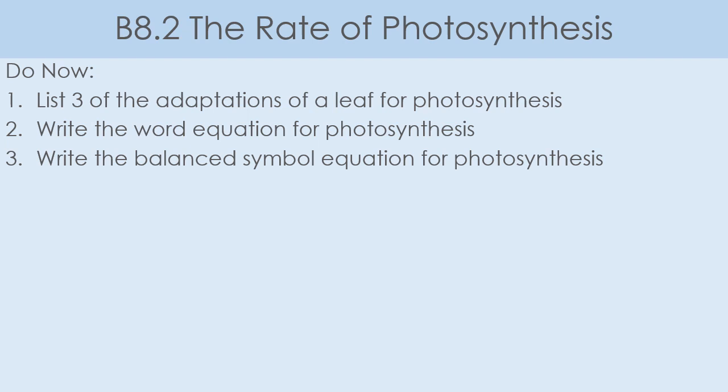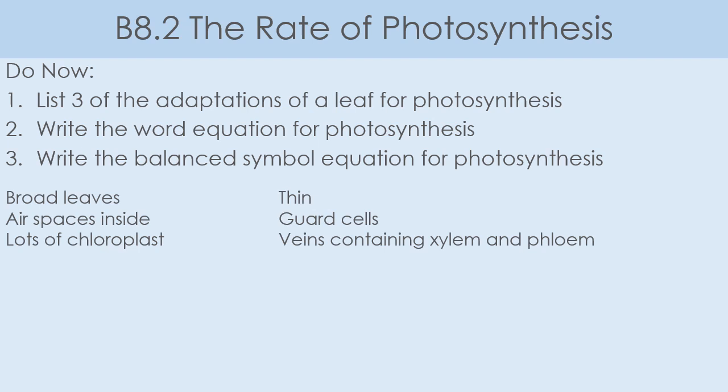For our adaptations of a leaf for photosynthesis, we've got six possible answers. Leaves are broad so they can absorb more sunlight. They are thin to make the distance for gaseous diffusion — so that carbon dioxide and oxygen diffusion — as small as possible. They've got air spaces inside, again to make it easier for the diffusion of carbon dioxide and oxygen, either from the atmosphere to the cells for photosynthesis, or going from the cells back out into the atmosphere. We've got guard cells around our stomata to control the size of the stoma — whether they're open or closed — to control the rate of gaseous exchange.